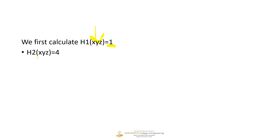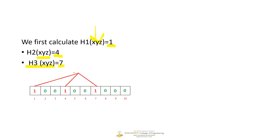I take xyz and apply it to hash function H2 and get output 4. Similarly, I apply xyz to hash function H3 and get output 7. So the outputs are 1, 4, and 7. In my array I will set bit 1, bit 4, and bit 7 to 1. You can see in the diagram that bit 1, bit 4, and bit 7 are set to 1, because these were the results of applying xyz to the three hash functions.